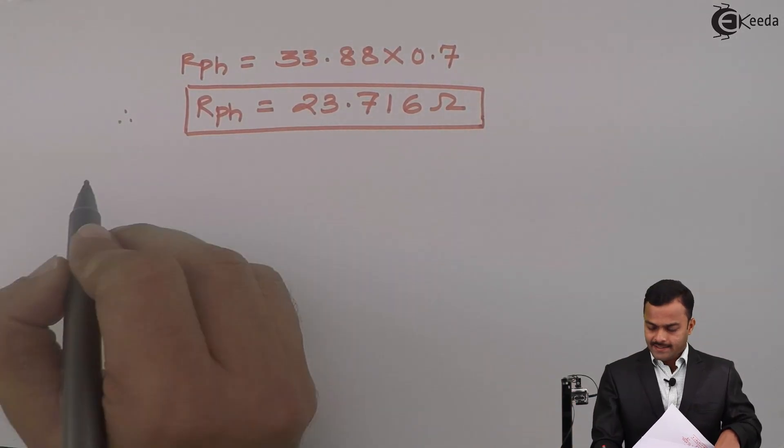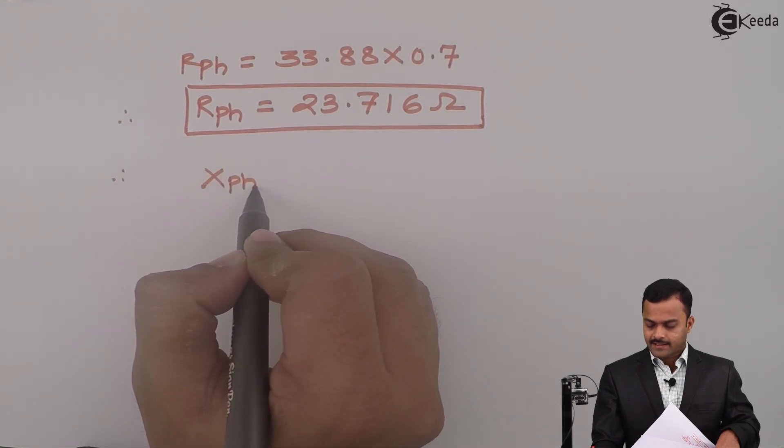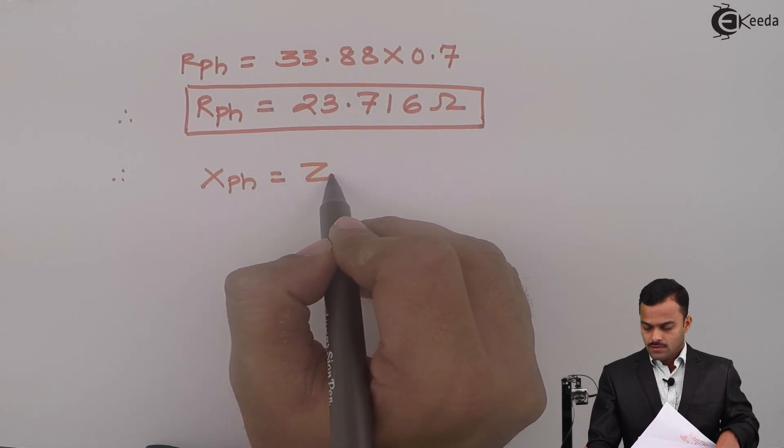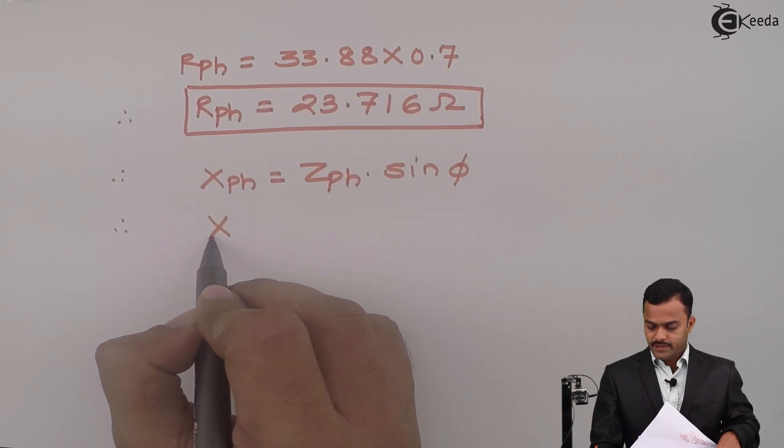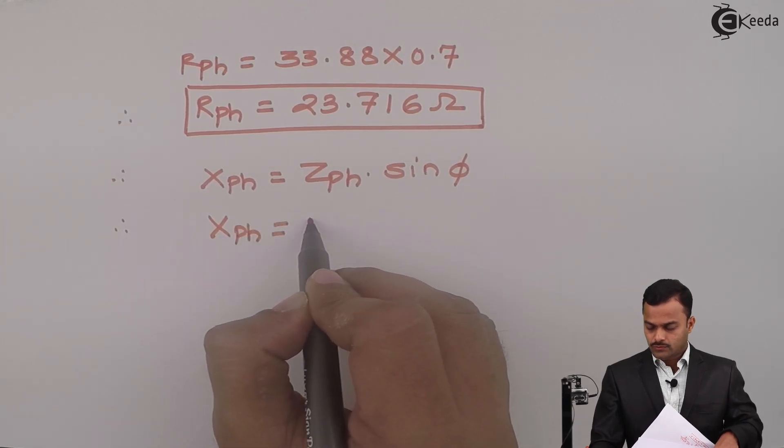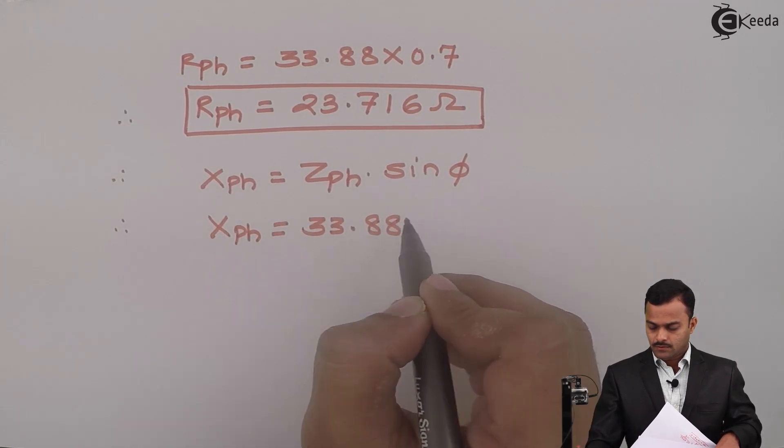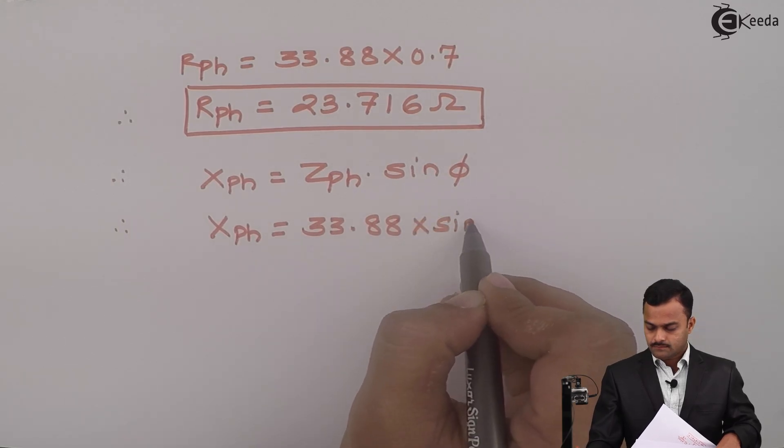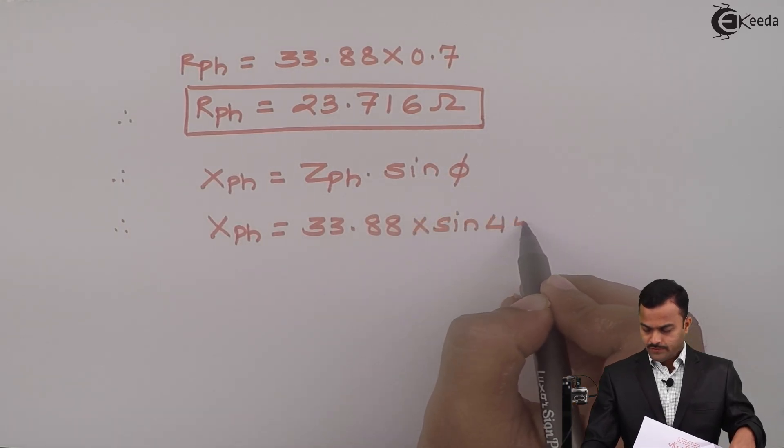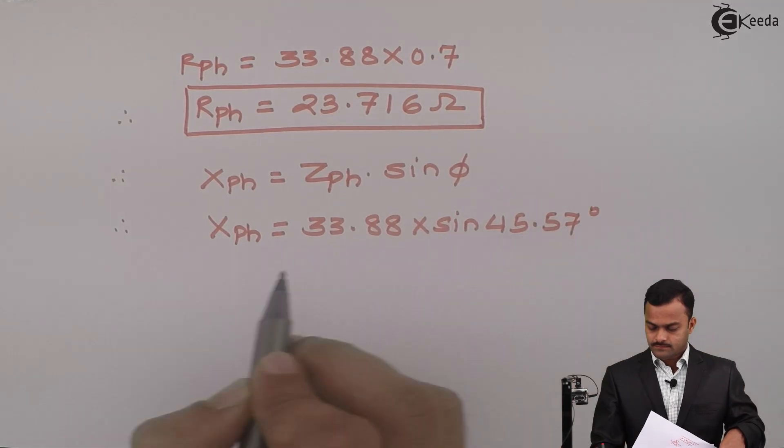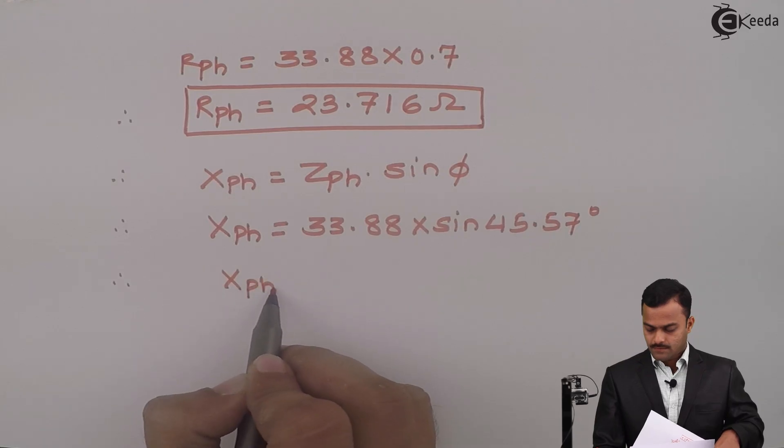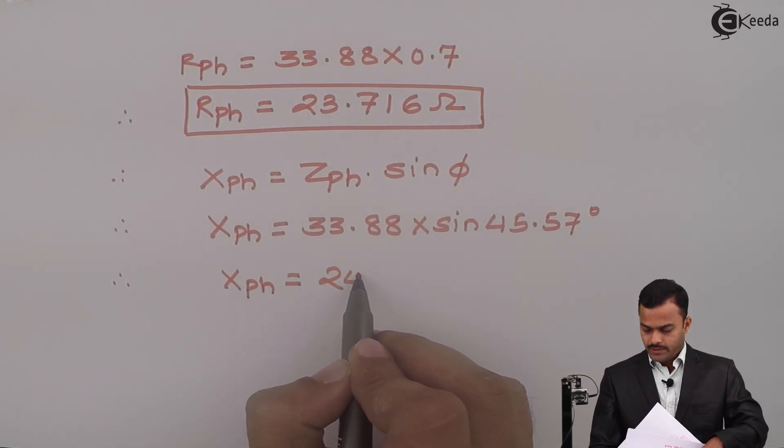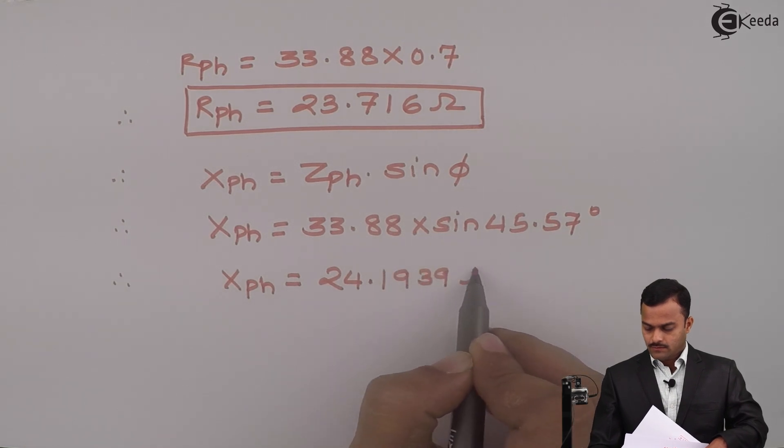Similarly, I can get XPh reactance equal to ZPh into sin phi. So XPh equal to 33.88 times sin 45.57 degrees. If we solve, you will get XPh equal to 24.1939 ohms.